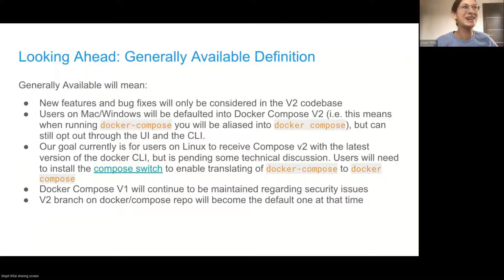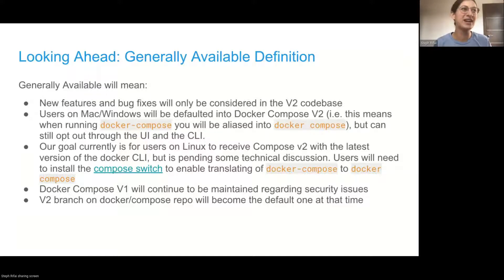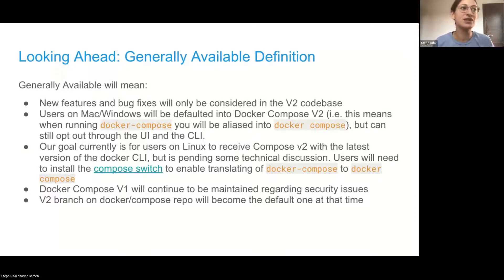We want to talk about what GA means to us. New features and bugs at that time will only be considered in V2. Users on Mac and Windows will be defaulted into using Compose V2, but it doesn't mean that Docker-Compose is going away — you will just be aliased into Docker Space Compose. You can still opt out at that time in the same ways you can now, through the UI and CLI. Our goal is around delivering it in the CLI for Linux, though we have some technical discussion around that still to work out. We have available the Compose switch, which enables translating Docker-Compose to Docker Space Compose on Linux, but it does require an active install there. V1 will continue to be maintained regarding security issues, and the V2 branch will become the default one.